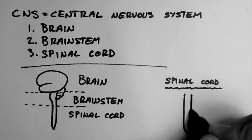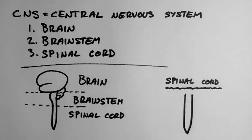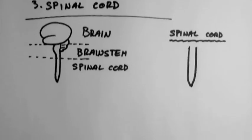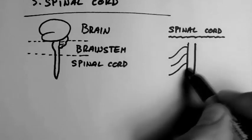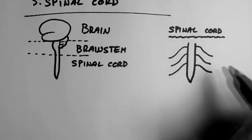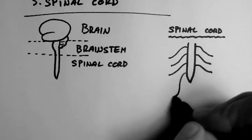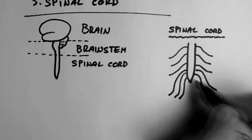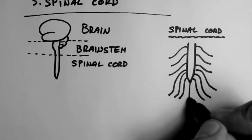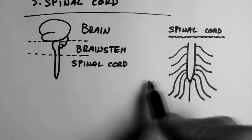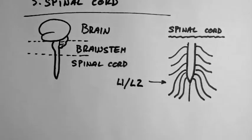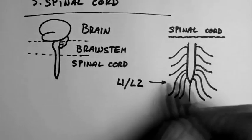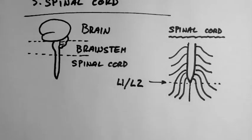The spinal cord hangs down like this from the brainstem. The spinal cord ends at the L1, L2 vertebral level.